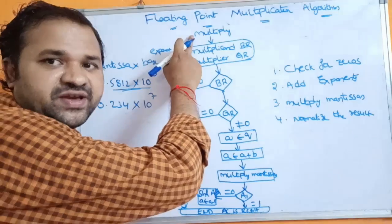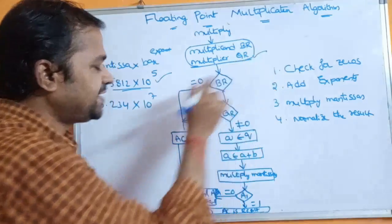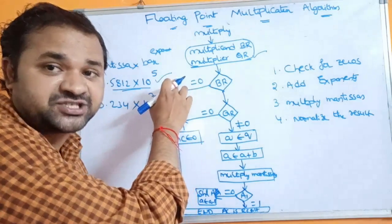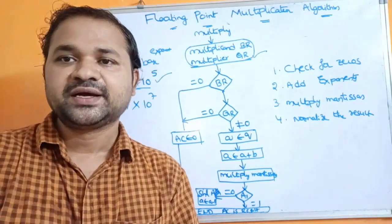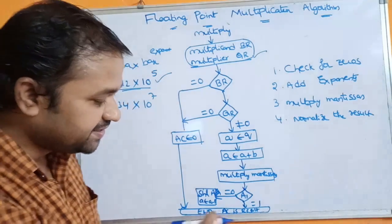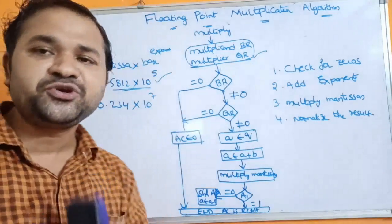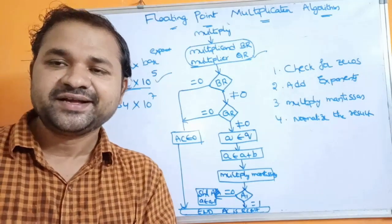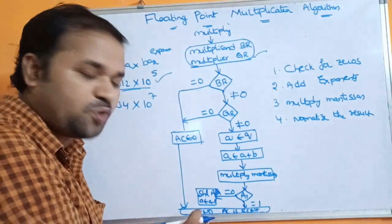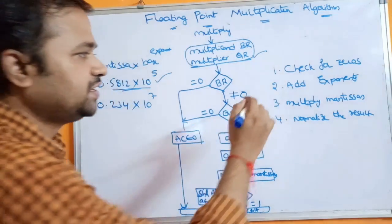In this multiplication operation, the multiplicand (first number) is stored in the BR register and the multiplier (second number) is in the QR register. First check whether BR is zero — if so, the result AC is zero and we stop. If BR is not zero, check QR. If QR is zero, then zero into anything equals zero, so AC is set to zero and we stop. If neither BR nor QR is zero, we proceed to step two.